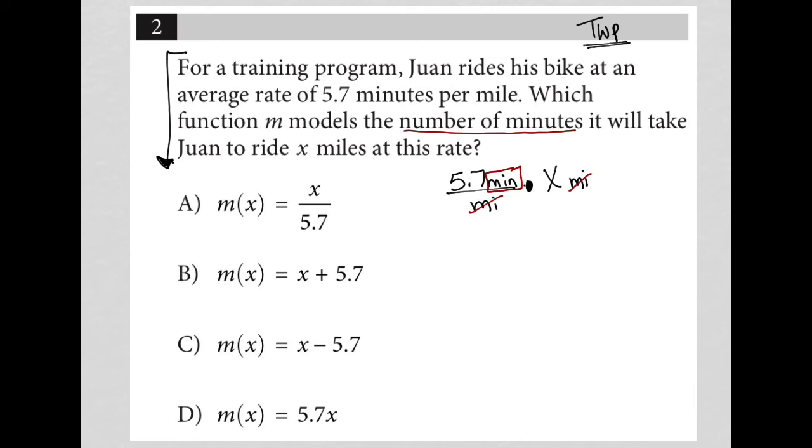And when I simplify this, I am left with just 5.7X. So my M of X is equal to 5.7X. And therefore, my correct answer here is choice D.